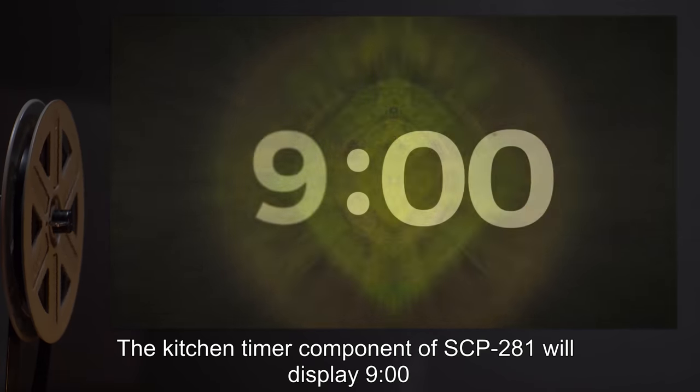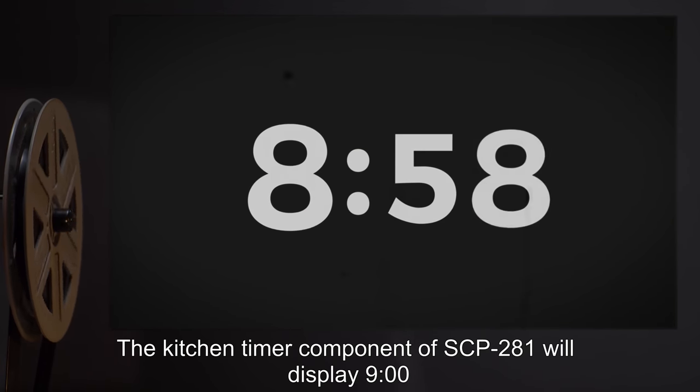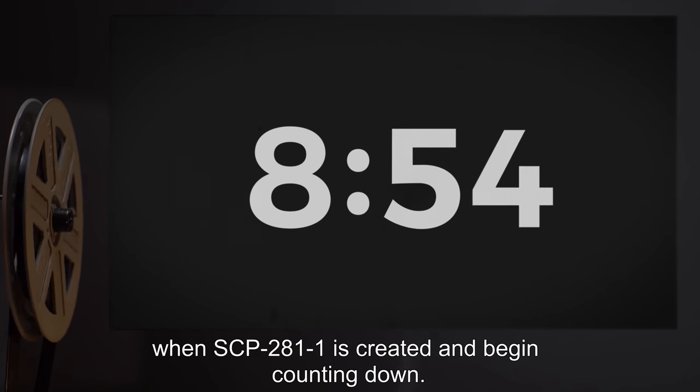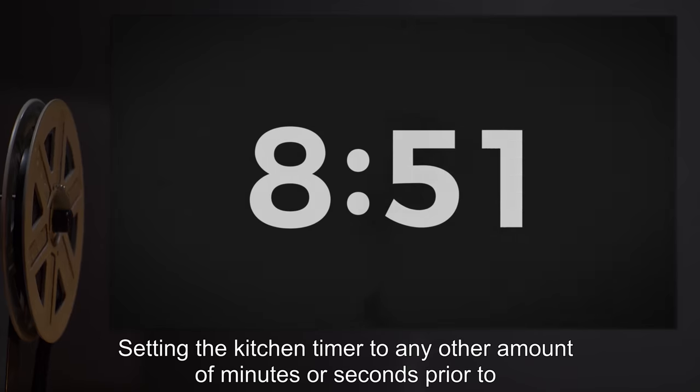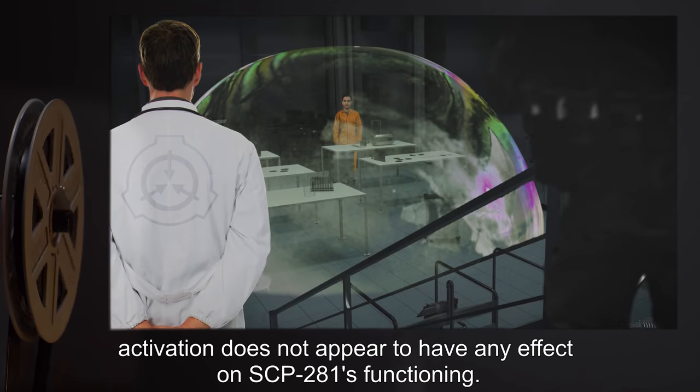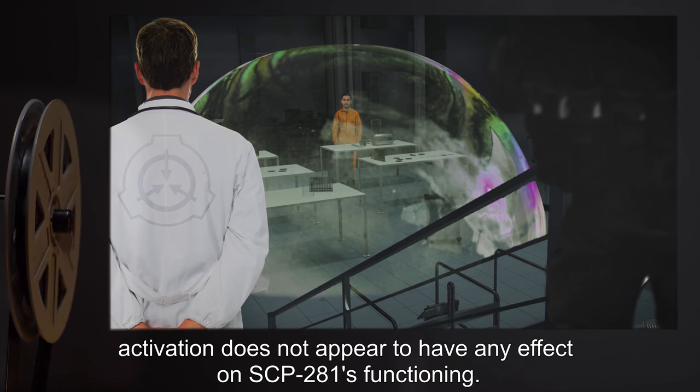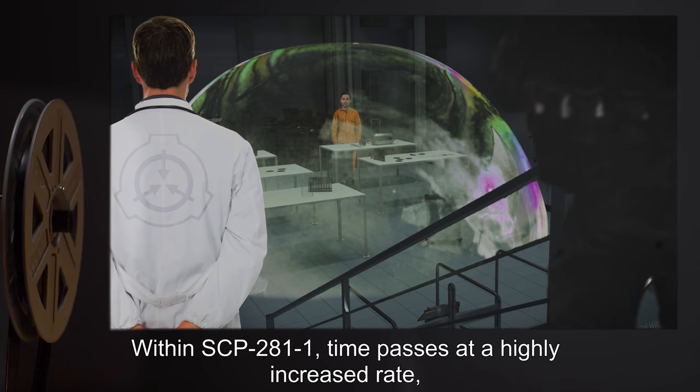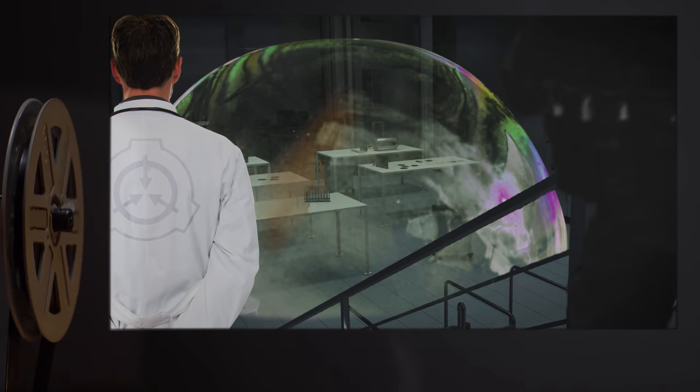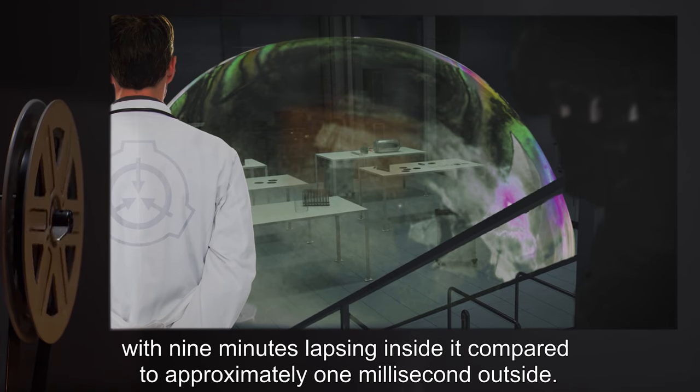How the device creates the temporal anomaly is unknown at this time. The kitchen timer component of SCP-281 will display nine minutes when SCP-281-1 is created and begin counting down. Setting the kitchen timer to any other amount of minutes or seconds prior to activation does not appear to have any effect on SCP-281's functioning.